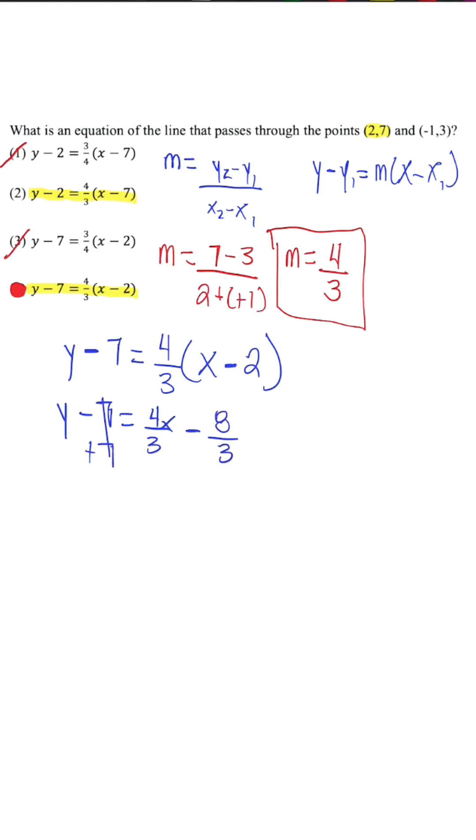Now, when we add 7, we have y is equal to 4 over 3x minus 8 over 3 plus 7. But as a fraction,